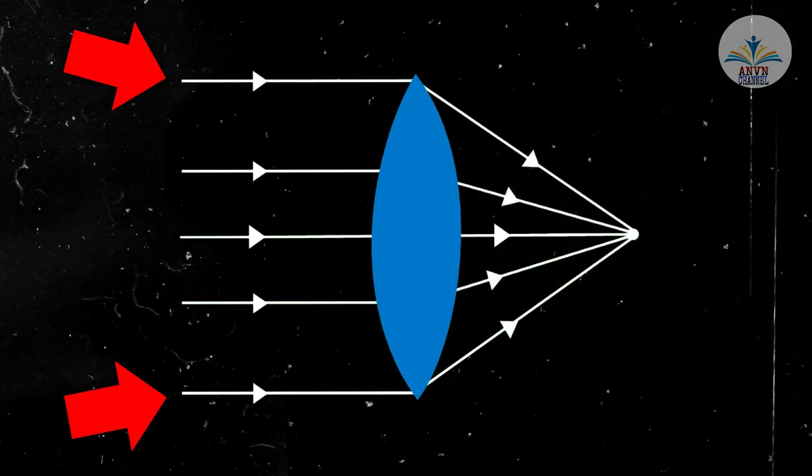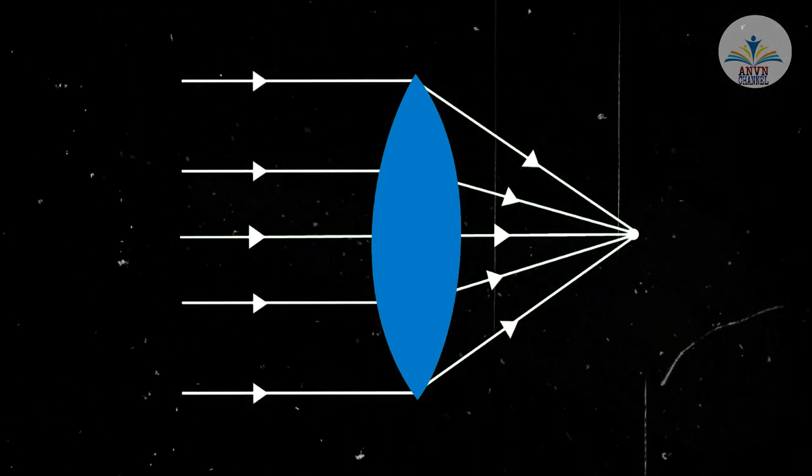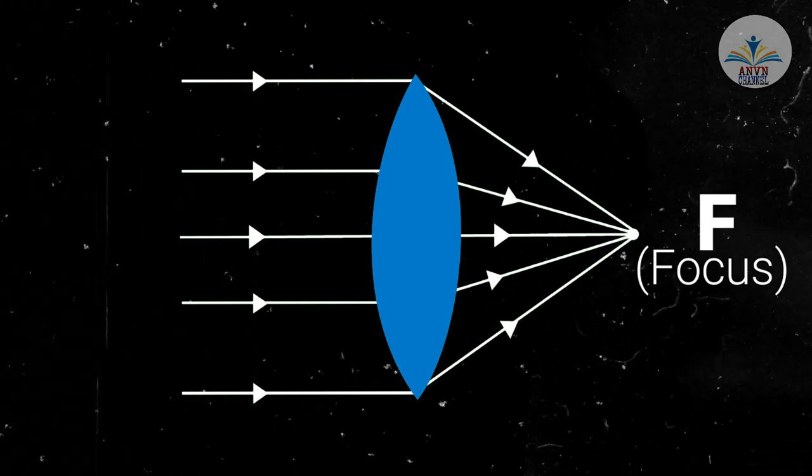But in the top and the bottom portions of the lens, the light rays are bent inwards and as a result create an image at the focus or F.